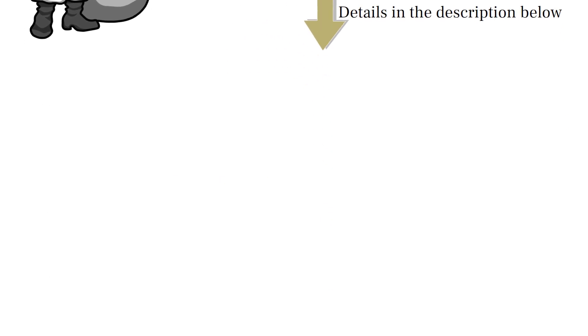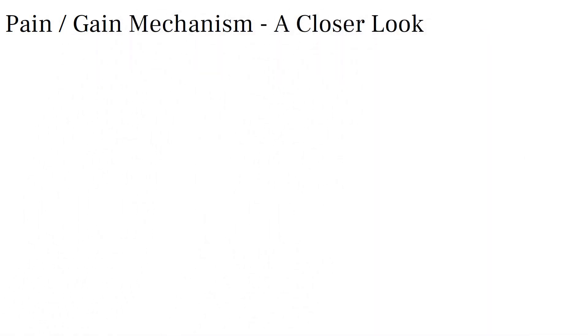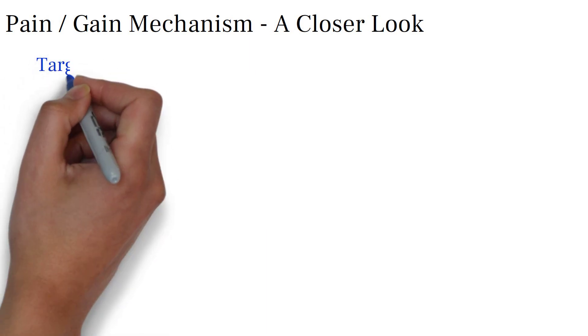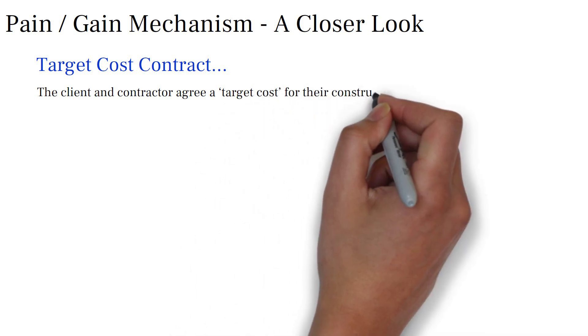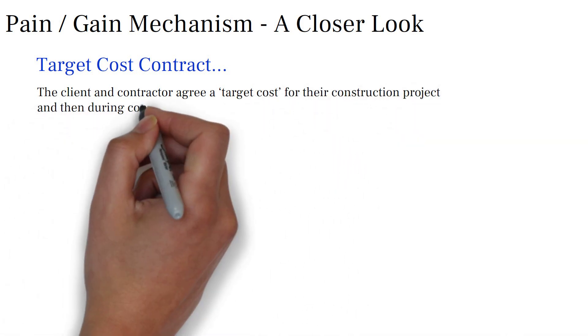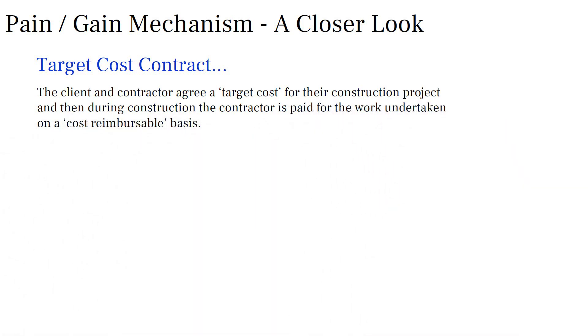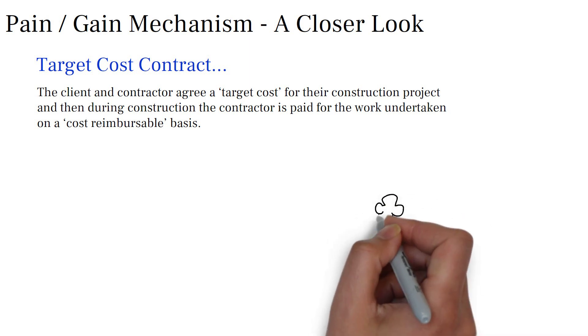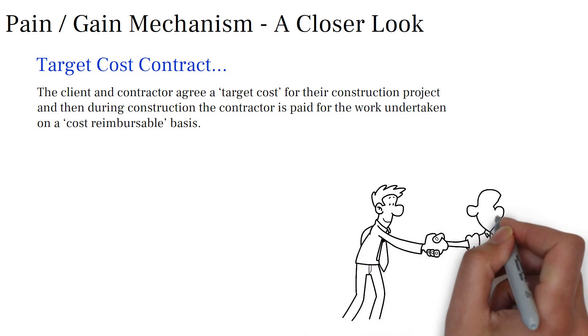We have covered target cost contracts in previous videos, but here we want to take a closer look at the pain gain mechanism and how it works. Before we do this, it is worth reminding ourselves what a target cost contract is. The basic premise is that the client and contractor agree a target cost for their construction project, and then during construction the contractor is paid for the work undertaken on a cost-reimbursable basis. These payments are assessed by looking at the contractor's records and accounts, generally on an open-book basis where the employer can inspect the actual costs incurred by the contractor to complete the works.